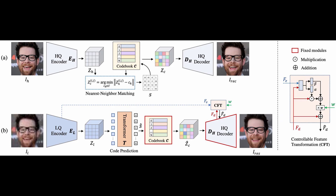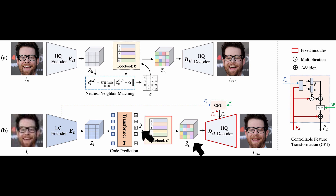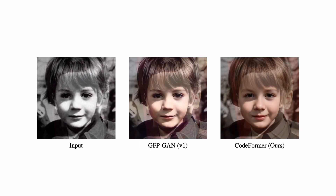How this works is simple. First, the tool learns a discrete codebook and a decoder to store high-quality visual parts of face images via self-reconstruction learning. Next, with a fixed codebook and decoder in place, a transformer model for code sequence prediction is introduced, which models the global face composition of low-quality inputs. Alongside that, there is a controllable feature transformation model which is used to control the information flow from the low-quality input to the decoder. And from end-to-end, we can see the results.